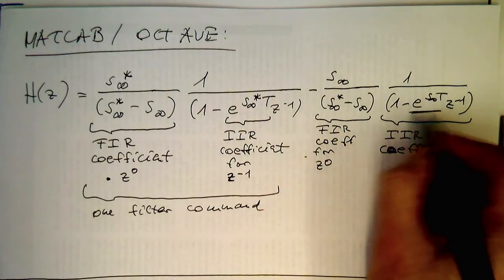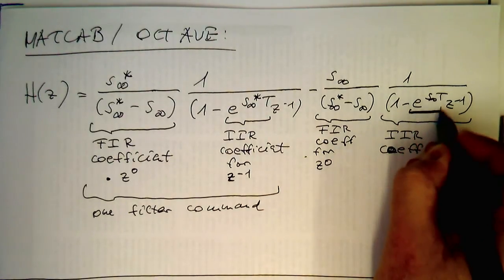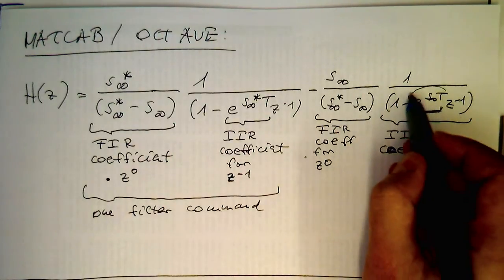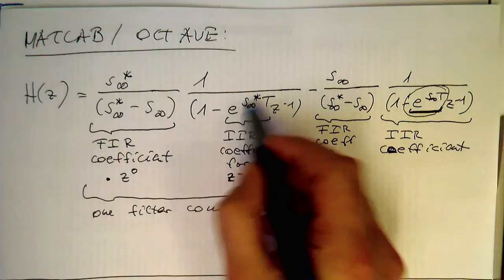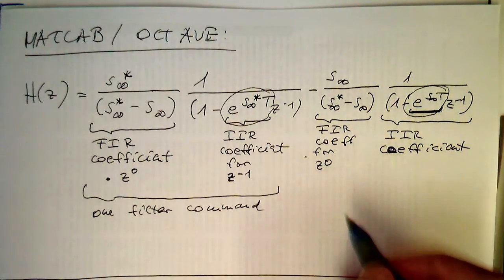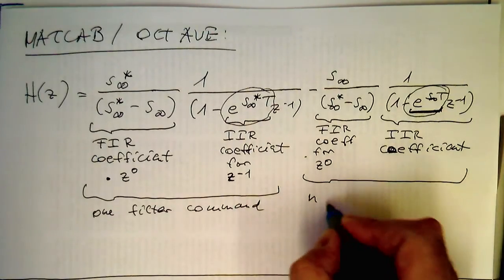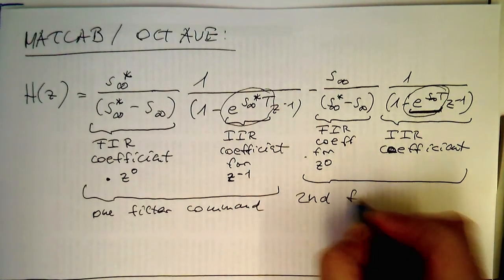Wait, or this one here essentially, so I shouldn't have drawn the curly bracket so far, so that's our IIR coefficient here. And so these, and these, and this here together forms us the second filter command.